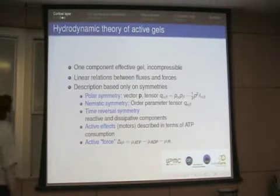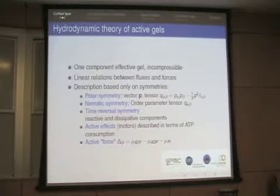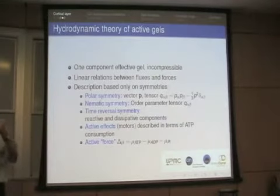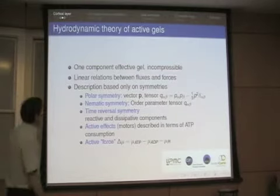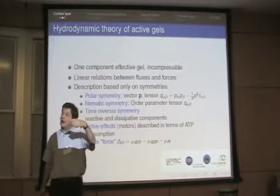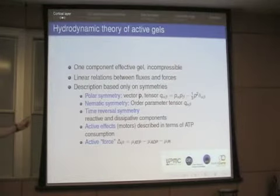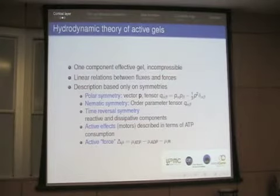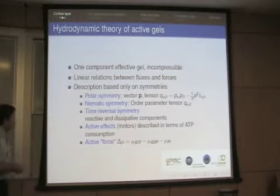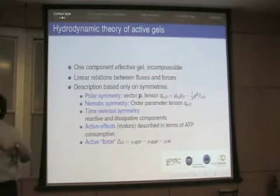The idea of hydrodynamics is to write linear relationships between fluxes and forces. One of the fluxes has to be the stress, because we want mechanical properties. We also keep track of actin orientation — actin is a polar filament, so locally it will be oriented, and we define the polarization and look at how it varies in time. The key point is that molecular motors consume energy: any time an ATP molecule is hydrolyzed, you get an energy delta mu of something like 25 kT. The conjugated flux is the number of ATP molecules consumed per unit time.